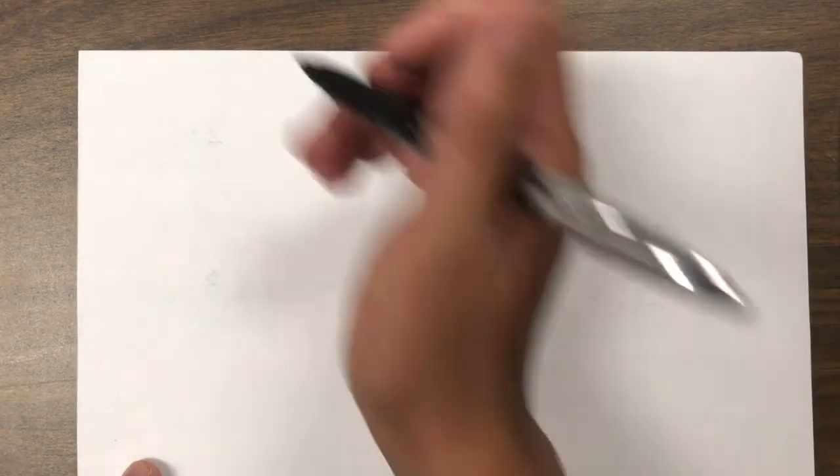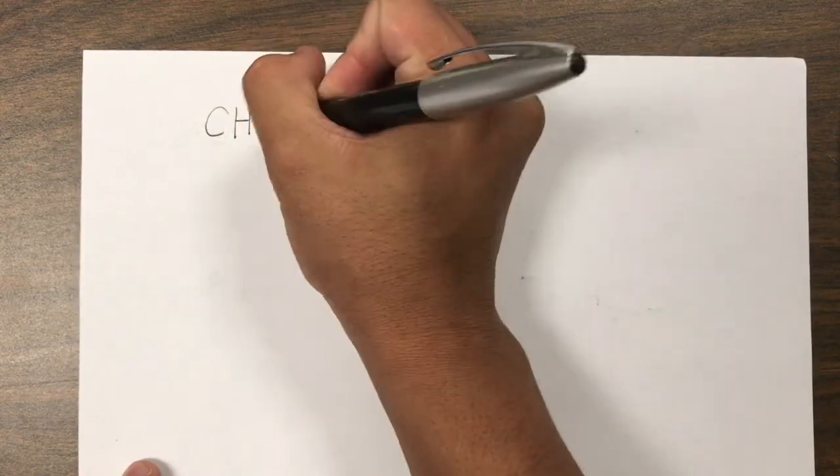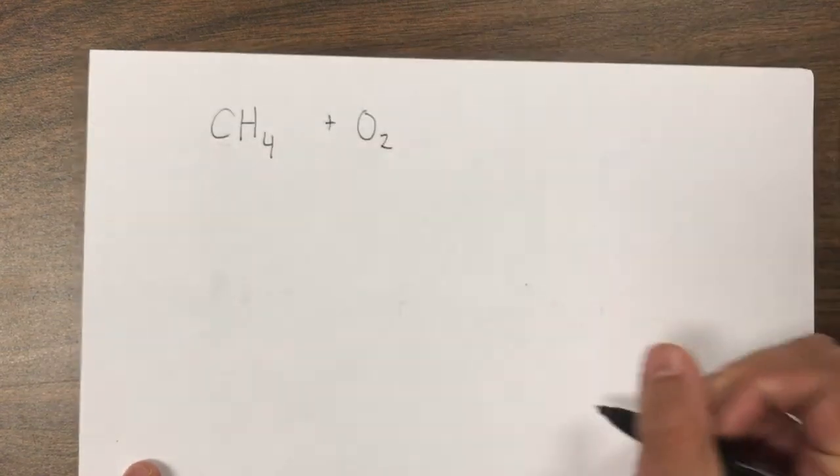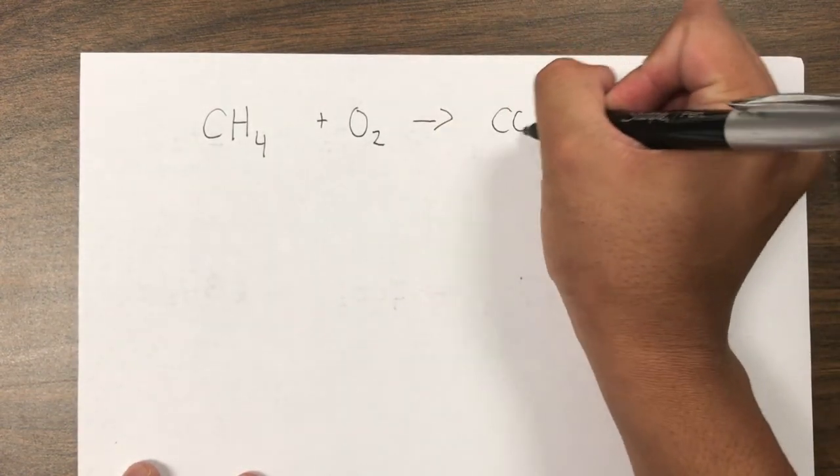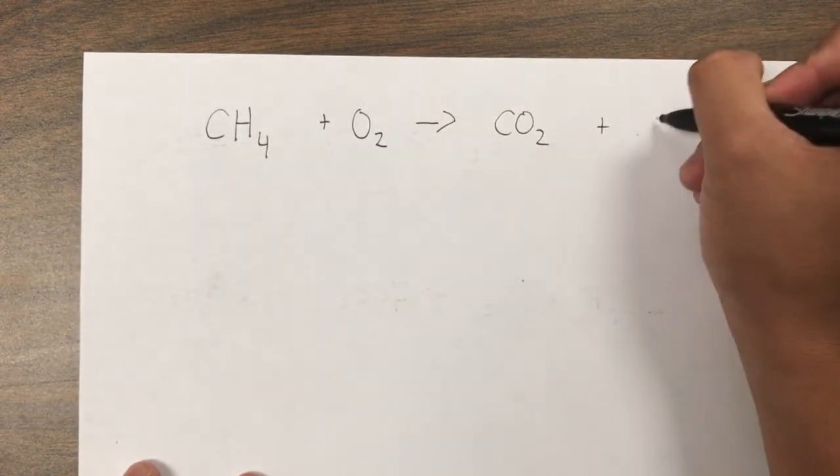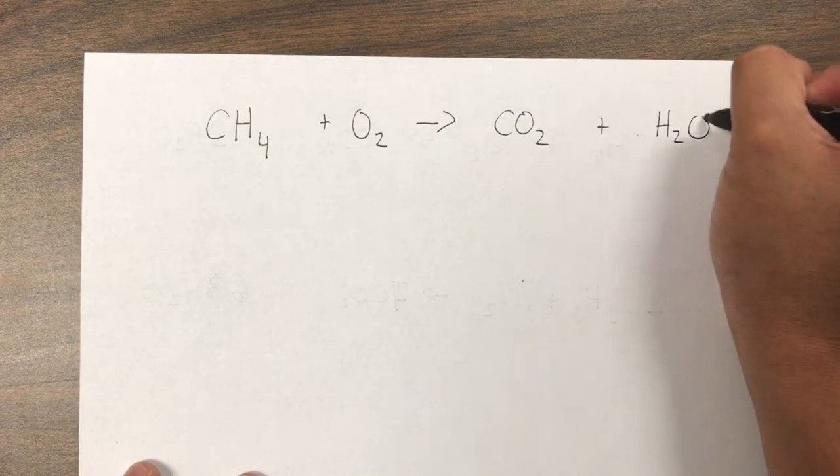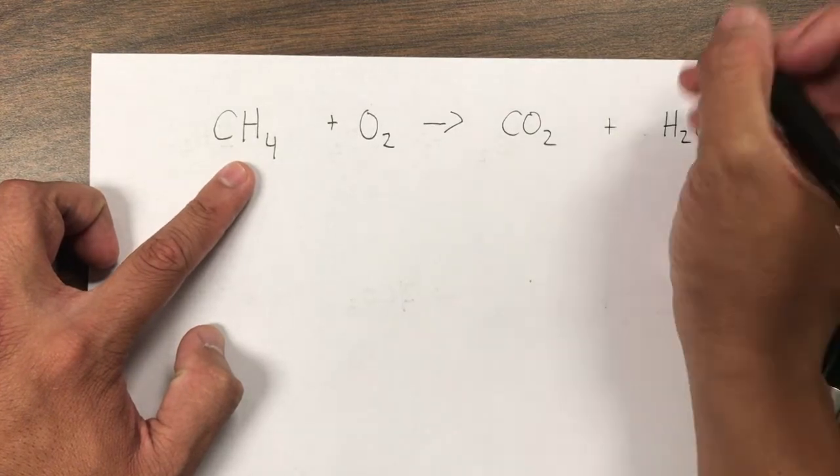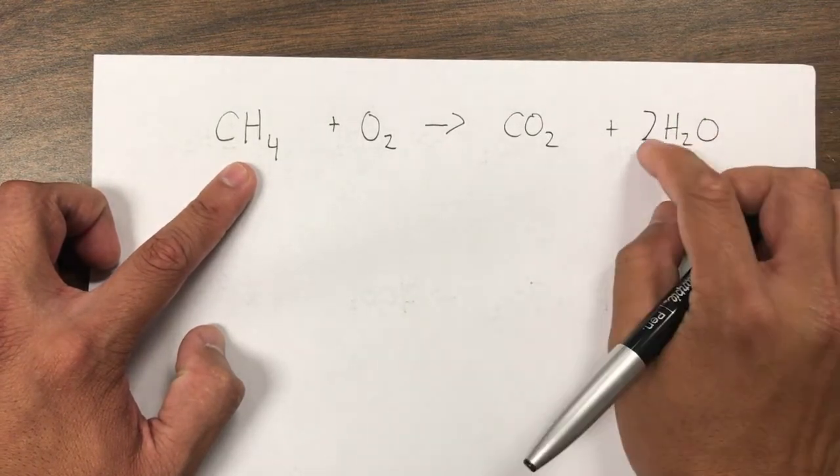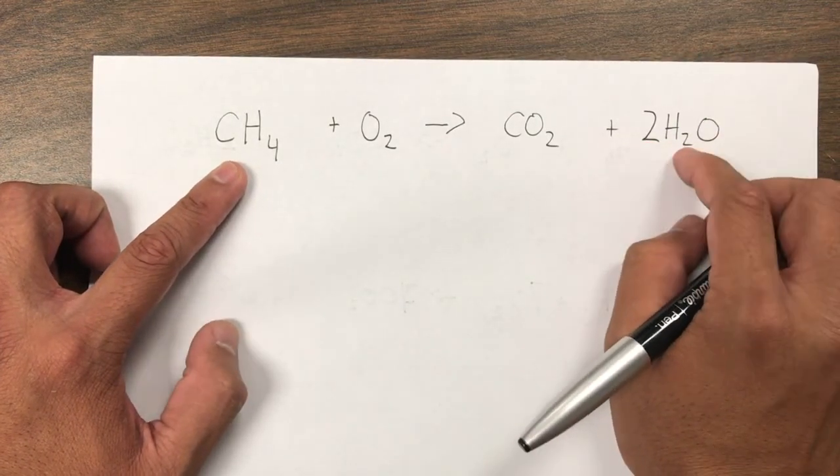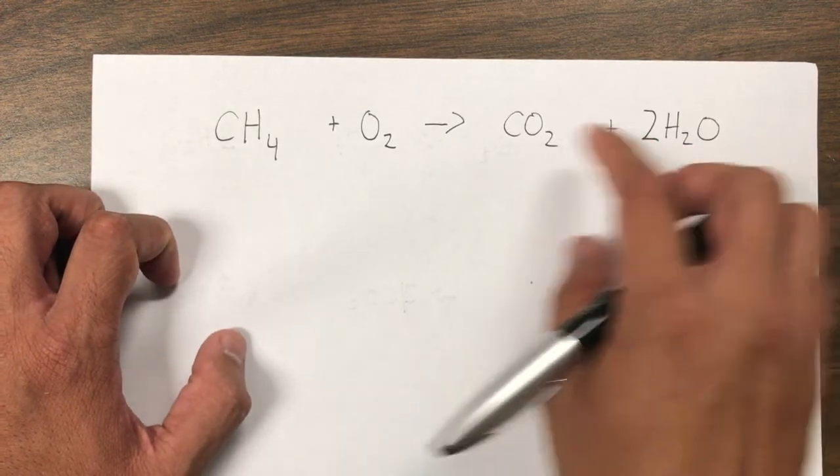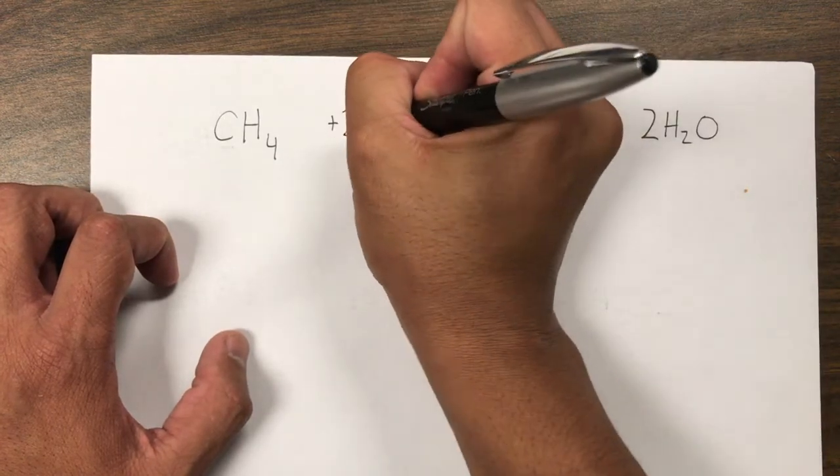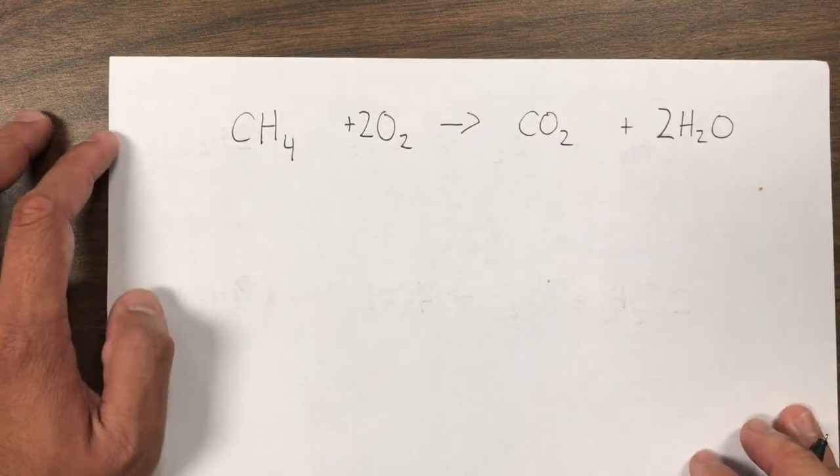Okay, so let's practice balancing a couple equations here. Let's do a combustion reaction. Here's methane, and for combustion, we take a hydrocarbon, and we mix it with some oxygen, and it will always produce two things, carbon dioxide and water. So let's balance this. I have one C, one C, that's good. Four H's, so I need four H's here. Again, with balancing, you can only change the coefficients, you cannot change these little subscripts. Oxygens, I've got two here, and I have two here, so I need a total of four there.